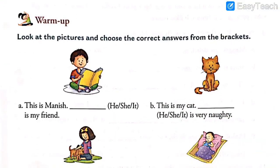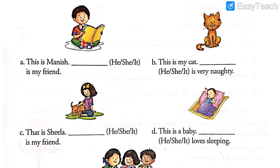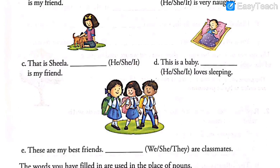In yesterday's video, we had discussed about these five pictures. The boy sitting here is Manish — for a boy, we write 'he'. The cat sitting here — for an animal, we write 'it'. The girl here, Sheila — for a girl, we write 'she'. For the baby who is sleeping, we write 'it' because it is a baby. For the fifth image showing a group of students, the girl standing in between says these two are her classmates. All three are classmates, so we use the pronoun 'we' because the girl herself is speaking the sentence.